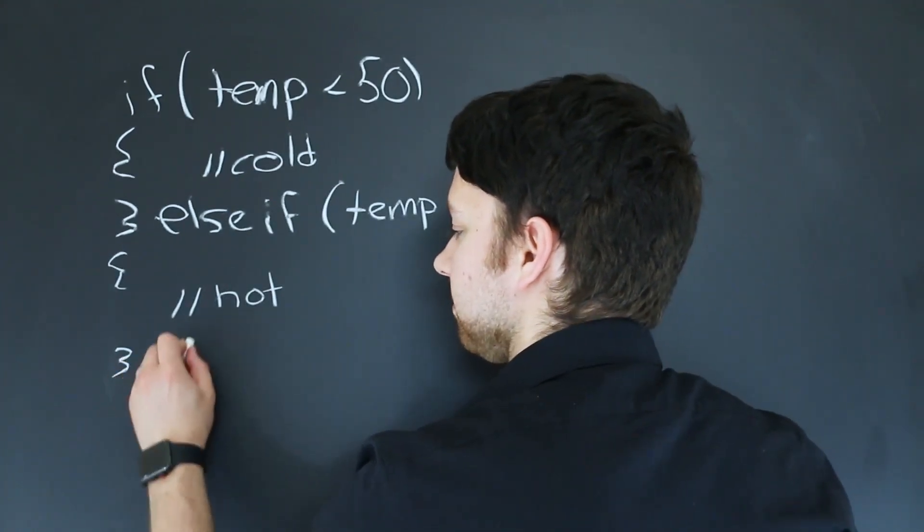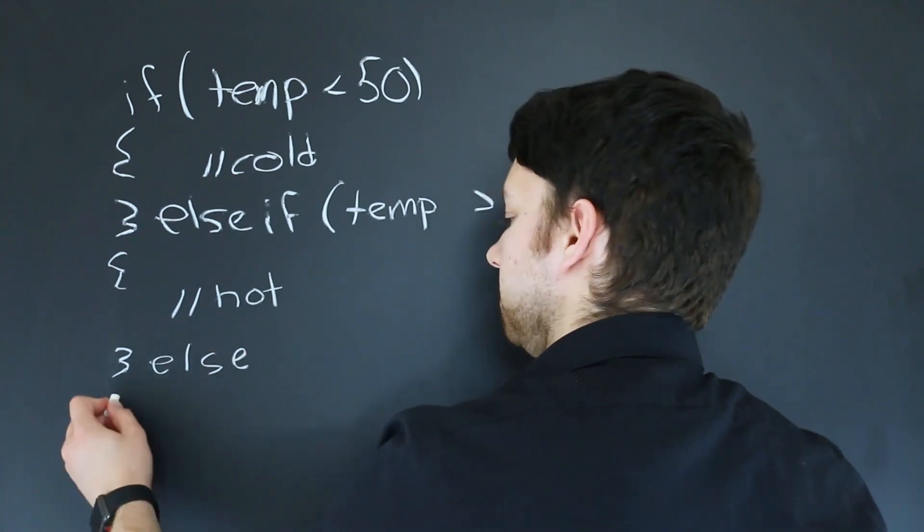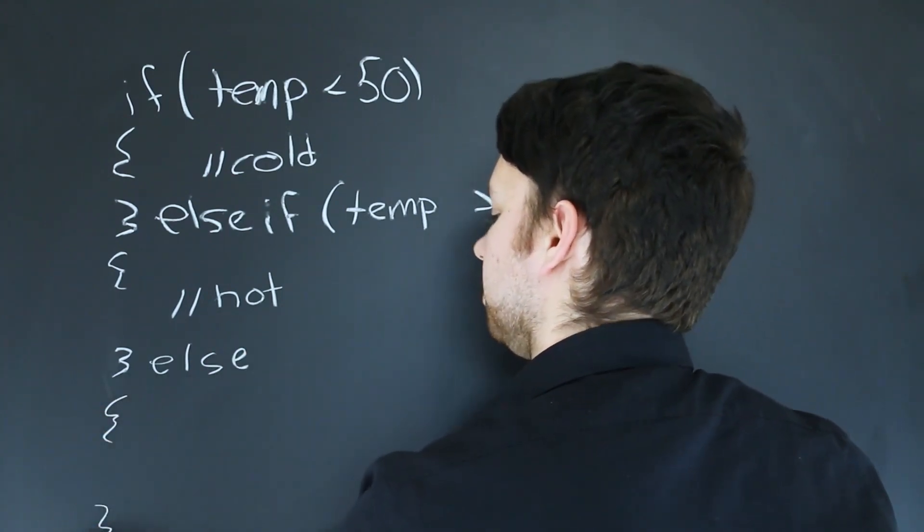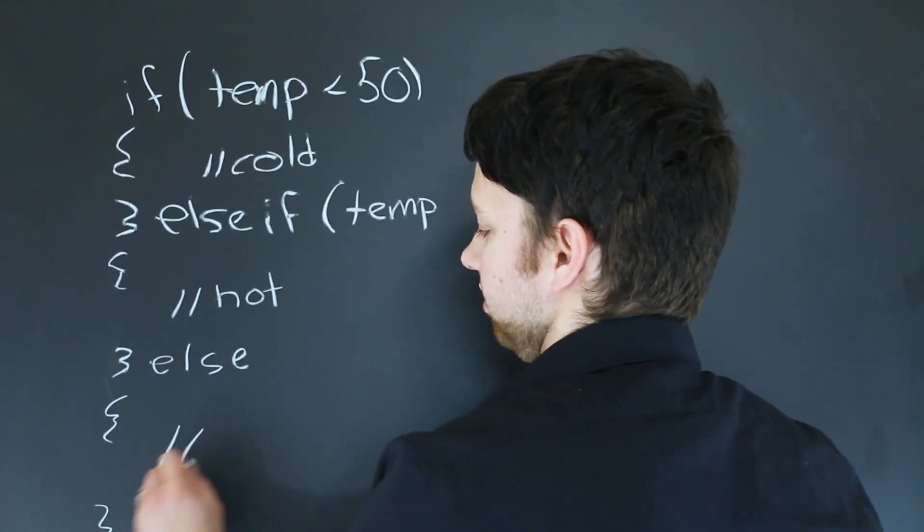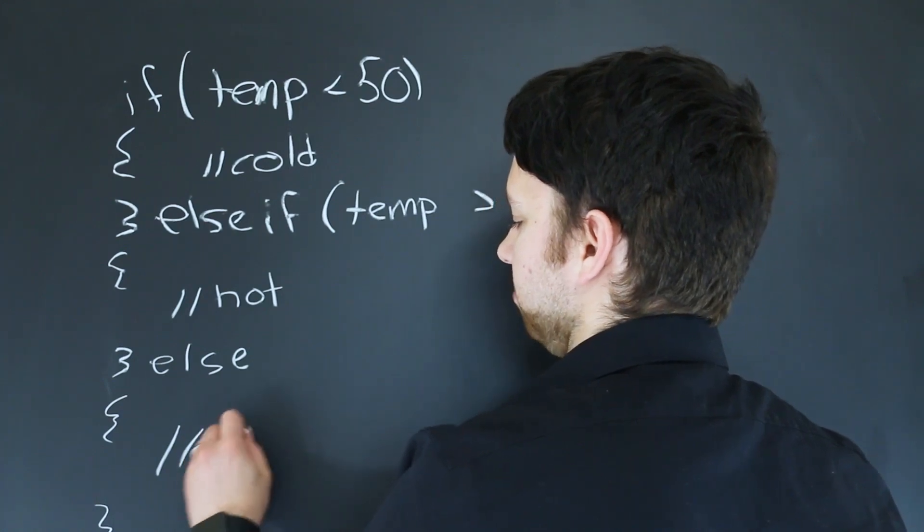Lastly we have the else. And you don't need curly braces for that. You do need the block of code. And I guess this would be average.